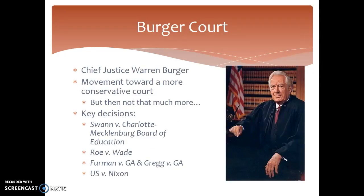Then there's the Burger Court, active around the 1970s under Chief Justice Warren Burger. There was a movement towards a more conservative court, but not dramatically more conservative than the 50s and 60s. Key decisions include Swann v. Charlotte-Mecklenburg Board of Education — which said it's permissible to enforce school desegregation through busing — Roe v. Wade, Furman v. Georgia and Gregg v. Georgia on the death penalty, and U.S. v. Nixon. Despite being considered a more conservative court, many of their key decisions weren't particularly conservative.